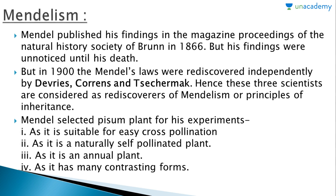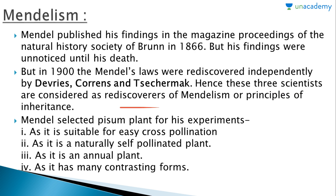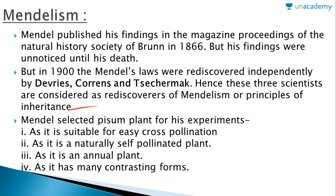Mendel published his findings in the magazine Proceedings of the Natural History Society of Brno in 1866, but his findings were unnoticed until his death. In 1900, Mendel's laws were rediscovered independently by De Vries, Correns, and Tschermak. Hence these three scientists are considered the rediscoverers of Mendelism, or the principles of inheritance.